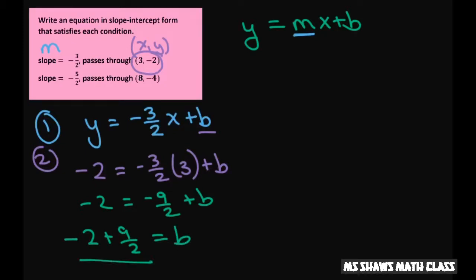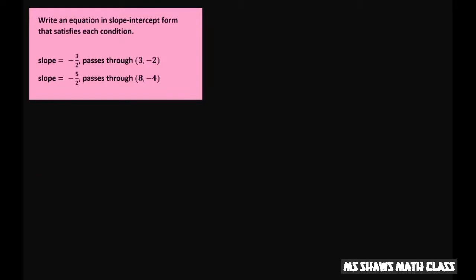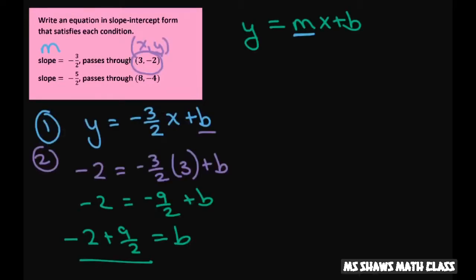Now you have to have the same denominator. So when you do the denominator we want a 2 under here so we have to multiply this also by 2. So that's going to be negative 4 divided by 2 plus 9 halves equals b.